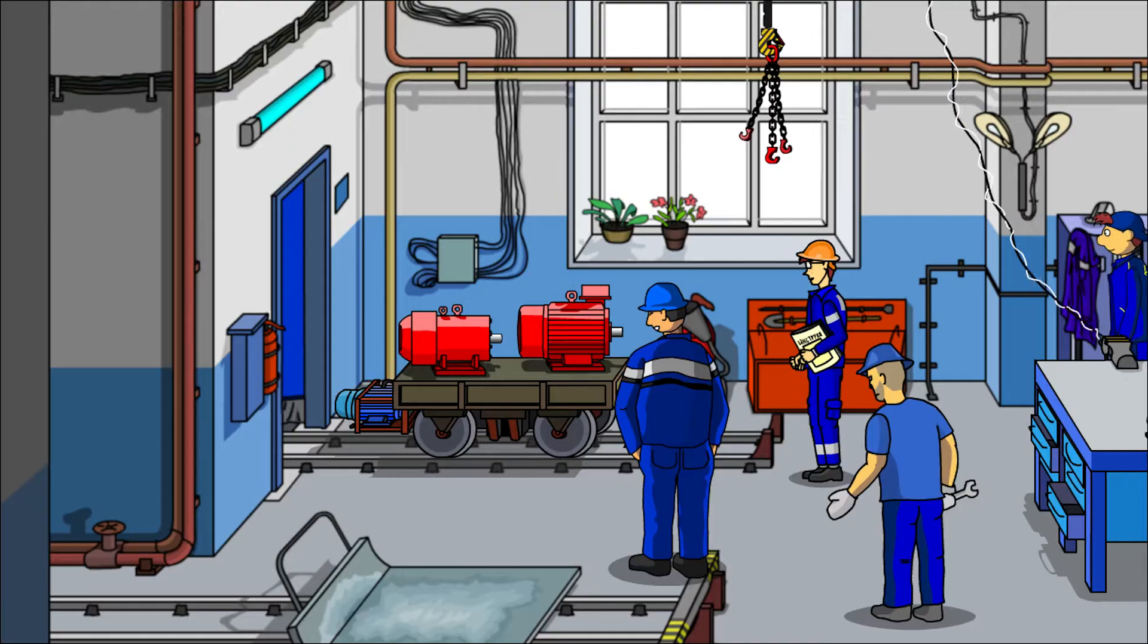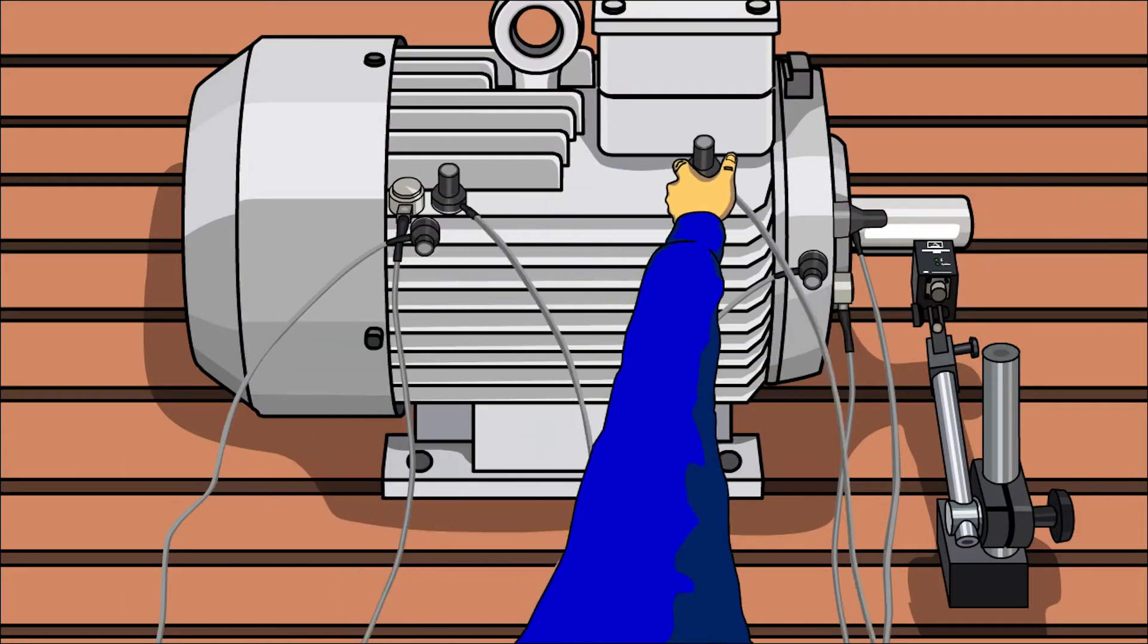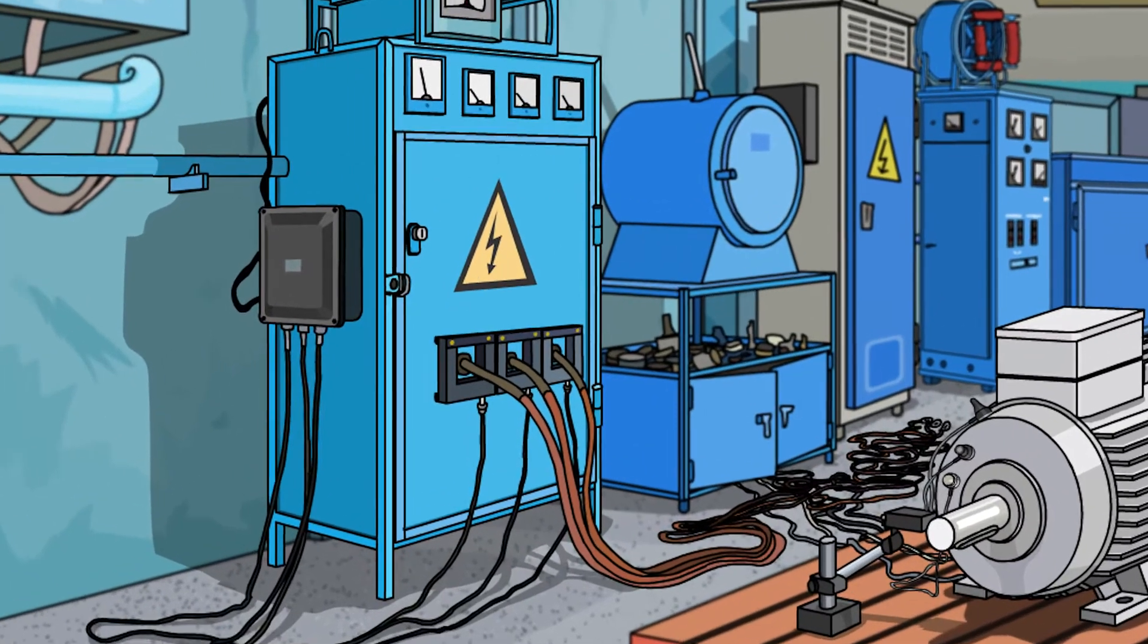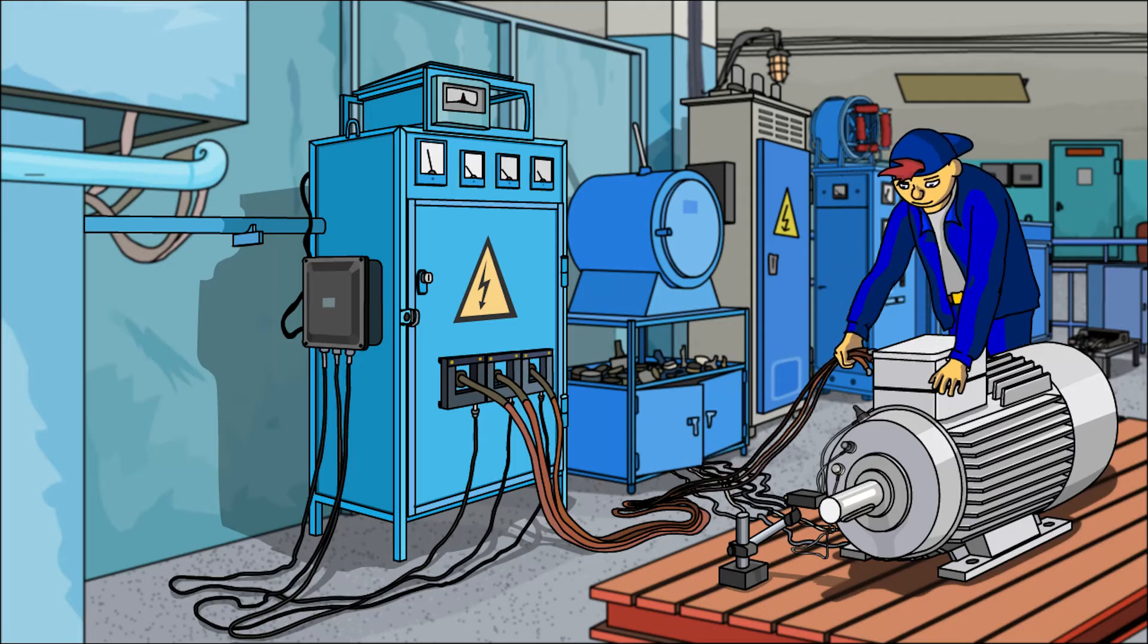After the electric motor is decommissioned for repair, a set of vibration, temperature and RPM sensors is placed on it. Four sensors are installed on the power field of the motor and one per each supply phase.